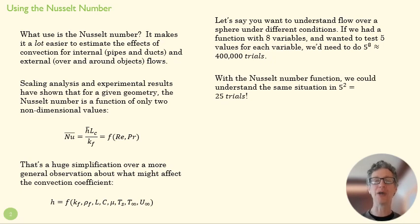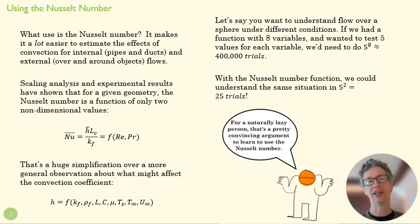If instead we think of this as a two variable function, as a function of the Reynolds number and the Prandtl number, we could cover those same situations in just 25 trials, which is pretty insanely different. And so you can see why scaling matters here, right? So all of those variables that you see down listed at the bottom of the page play some part in Reynolds and Prandtl.